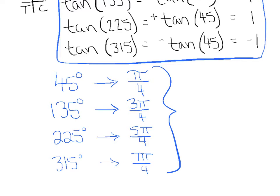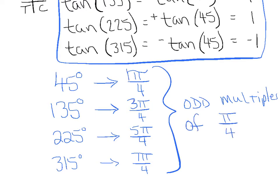Hopefully you've identified a pattern — that's what great mathematicians do. What we have here is the odd multiples of π/4: 1π/4, 3π/4, 5π/4, and 7π/4. So all the odd multiples of π/4 — that's a quick way to remember the really important values for tangent.